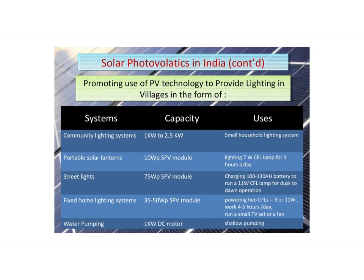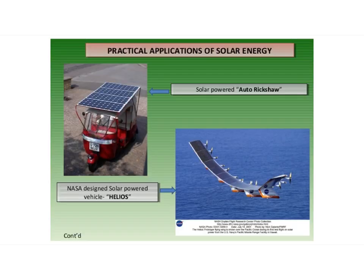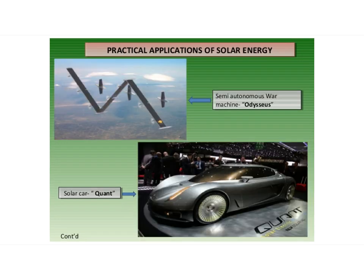B. Solar battery. A large number of solar cells connected in series is called a solar battery. It is used in remote areas where continuous power supply is a problem.